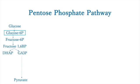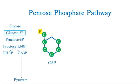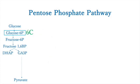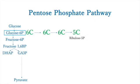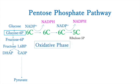We can look at the number of carbons. Glucose-6-phosphate has 6 carbons, followed by a 6-carbon intermediate, then a 5-carbon molecule — ribose-5-phosphate. Two NADPH molecules are produced in these reactions: in the first reaction and the last reaction. This portion is called the oxidative phase. Fructose-6-phosphate is also generated here. Two NADPH molecules are produced in the oxidative phase.